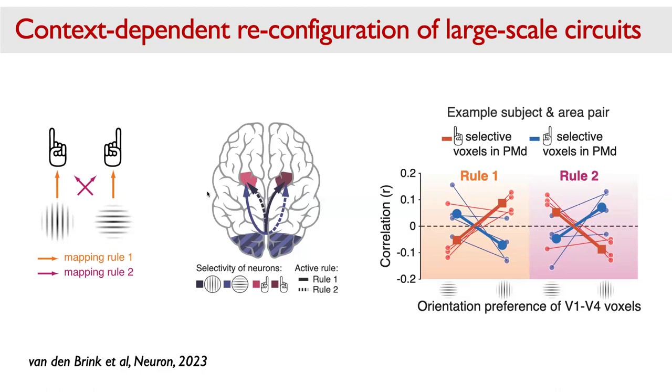This analysis comes from noise correlation analysis — feature-specific noise correlation analysis — as often done in animal physiology with parallel recordings of many neurons. What you can see is that feature selectivity really matters. There's clear structure: the thin lines are separate scans of the same subject, the thick line is the average, and there's a clear crossover pattern. Most critically, this feature-specific structure flips depending on which rule is currently active — exactly in line with the dynamics of circuit reconfiguration we had in mind.